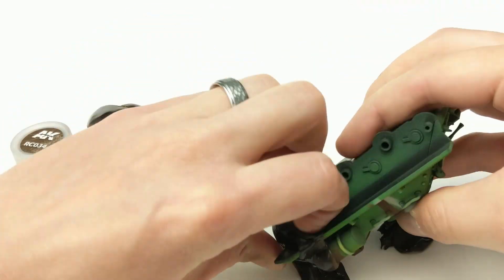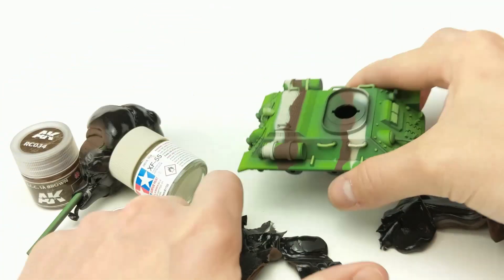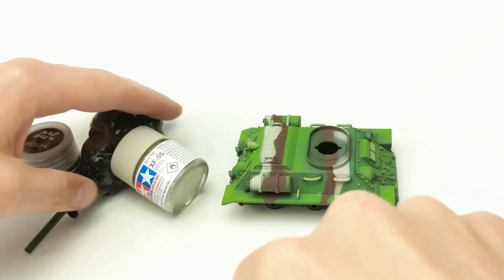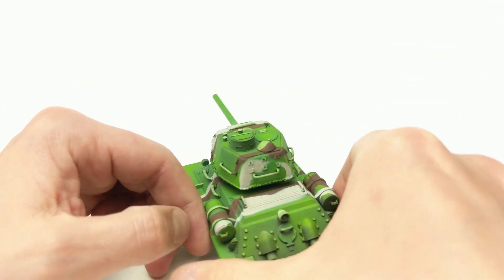Once that second coat is applied, or that second color I mean, we take the putty off, and there we go. We have some nice camouflage tones in there, and it actually blends pretty well in the Finnish forest.